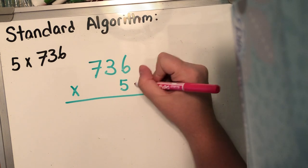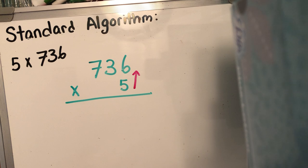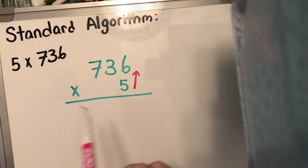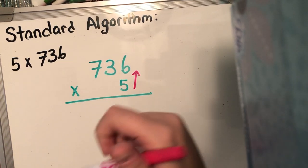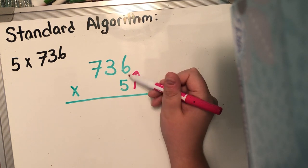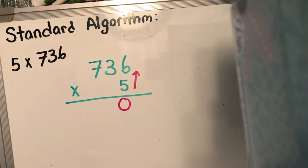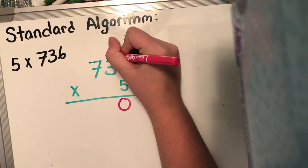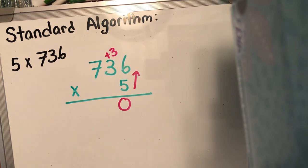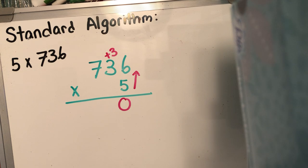Remember in standard algorithm, we essentially just do what we were doing with partial products, except we're not putting all the products down — we're just putting part of it down, a little itty bitty part. The method is pretty much the same where we're going up and then across and then across. So I'm gonna go up the ones. Five times six is 30. I'm gonna put down the zero and carry the three above the three in the tens place.